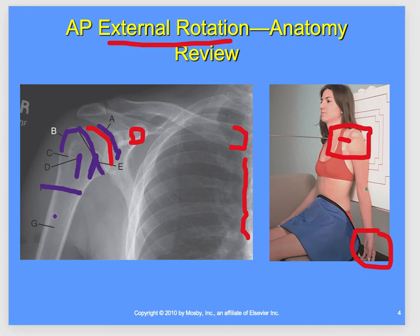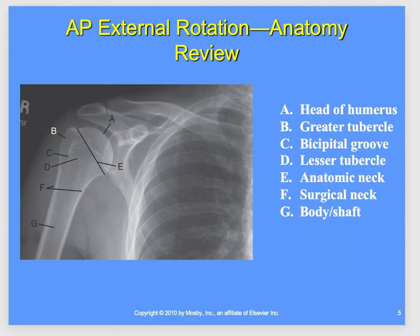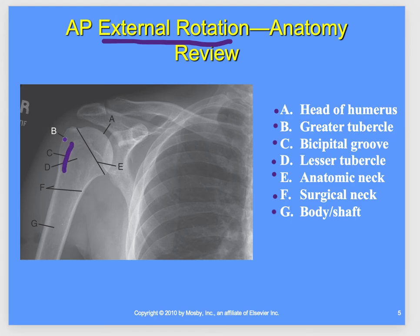The shaft and body run right straight down. For the labeling: A is the head, B and C the bicipital groove, D the lesser tubercle, E the anatomic neck, F the surgical neck, G the body and shaft, and then your greater tubercle and lesser tubercle labeled here.